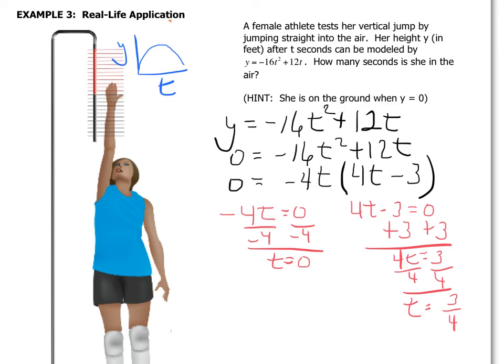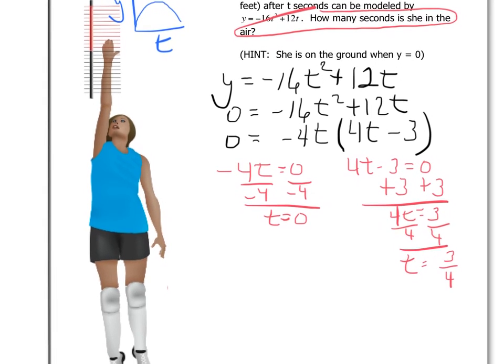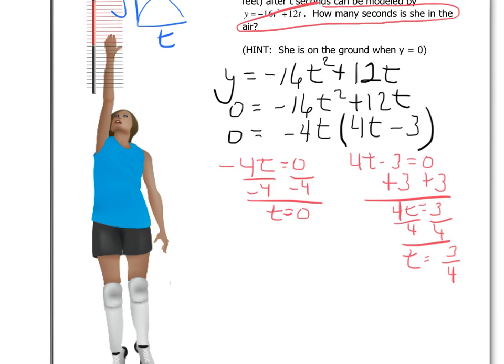So again we want to answer the question. The question is how many seconds is she in the air? Well looking at that as the question versus what we are given, basically what we are told is that she's going to leave the ground at zero, which means she starts her jump.